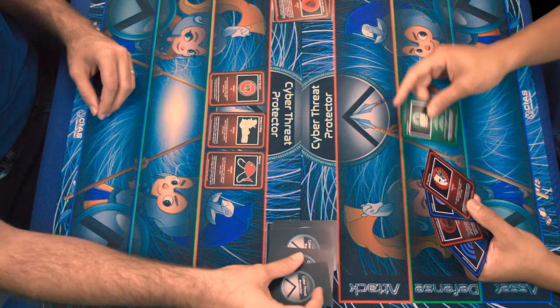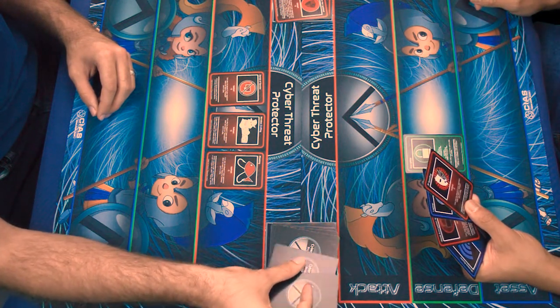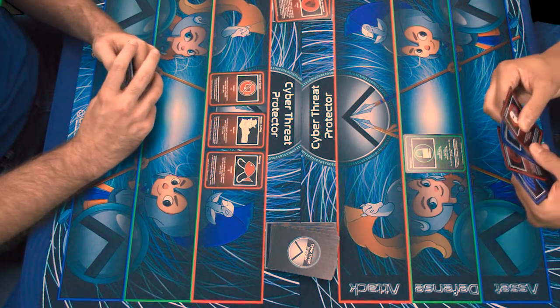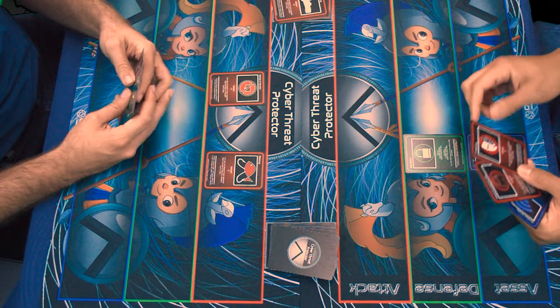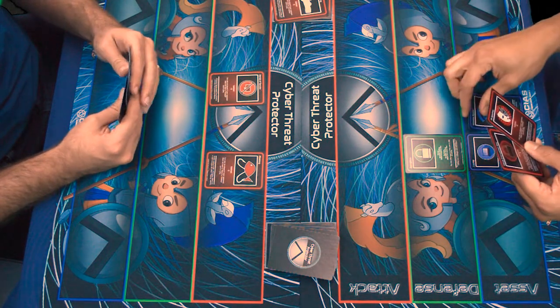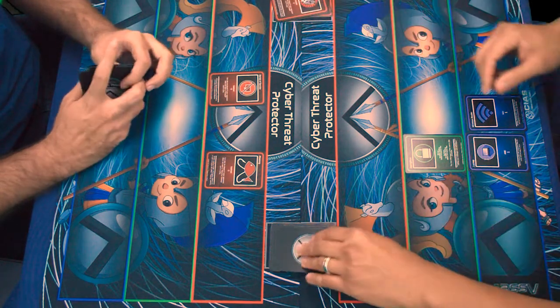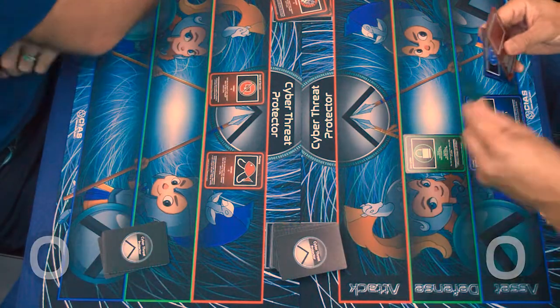So I'll play an encryption card to remove your wireless sniffing. And I will play a laptop and a wireless router. All right. So that's the end of the first round. You lose two points from my attacks, but you gain two. So we're both at zero.